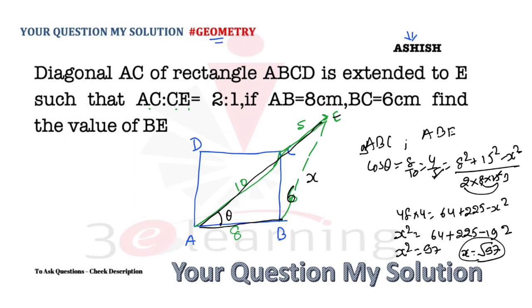You can use the second method of coordinate geometry. Say A is (0,0), B is (8,0), and C is (8,6). The ratio AC:CE is 2:1. Using the section formula, we can find E. The x-coordinate: 2x + 0 divided by 3 equals 8, which gives us 12.